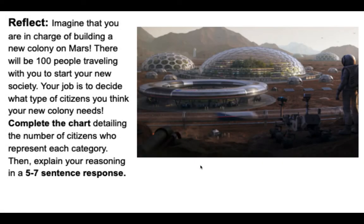I want you to imagine that you were in charge of building a new colony on Mars — how exciting! There will be a hundred people traveling with you to start your new society. Your job is to decide what type of citizens you think your new colony needs. You're going to complete the chart detailing the number of citizens who represent each category, and then explain your reasoning in a five to seven sentence response. By the way, this is a picture that's actually a mock-up of what society could look like on Mars — kind of throwing me for a loop that that's actually potentially real, but this could be a real probable situation.